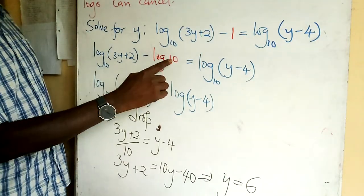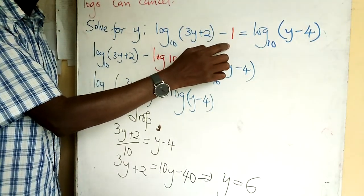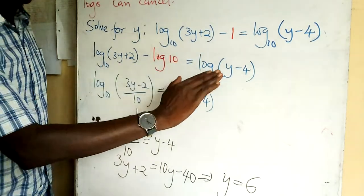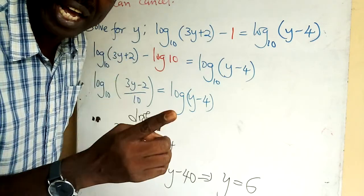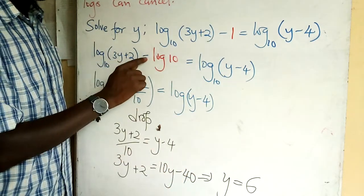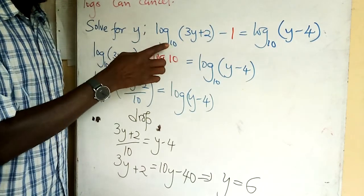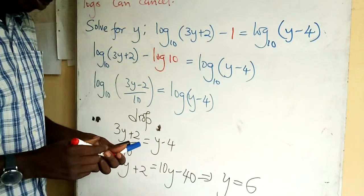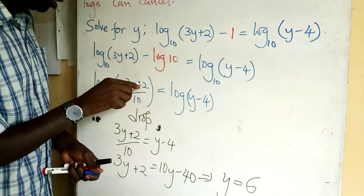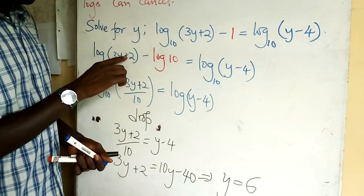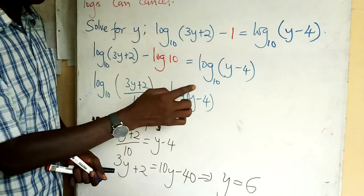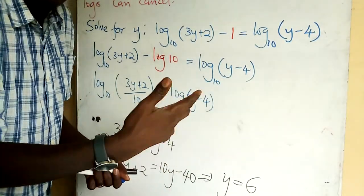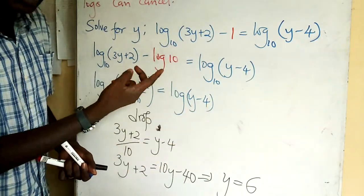When there is a subtraction between logarithms, we divide the numbers. So I have (3y + 2) over 10 equals that. The right hand side is already simplified - I have only one piece of log. The left hand side has two pieces, so I have to condense them using the log. When you reach here, do not cancel the word log.